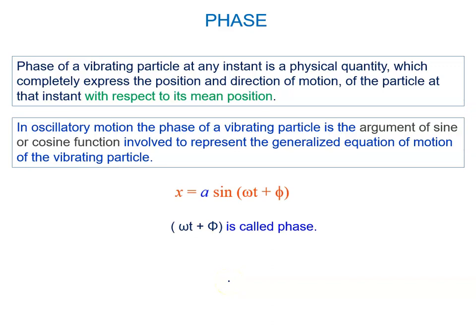Phase of a vibrating particle at any instant is a physical quantity which completely defines the position and direction of motion of the particle at that instant.